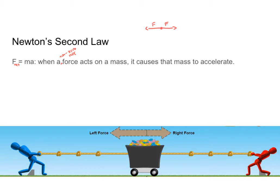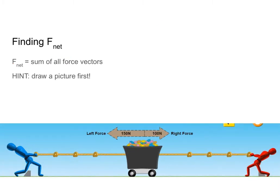The easiest way we can think about F net, or our net force, is it's just the sum of all the forces. If I push on a table and you push on a table in the same direction, the table's going to move more quickly because we're both pushing on it. If we're pushing in opposite directions, it'll move slowly — or it may not even move at all — because our forces are balancing each other out. So the key here is we want to add up all of our forces.